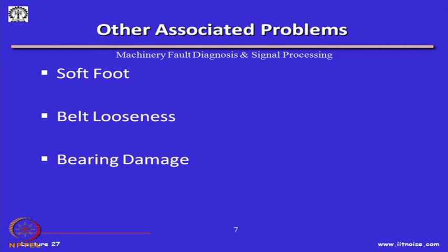Associated problems include soft foot, belt looseness, and bearing damage — if loose components go undetected, they impose excessive forces on bearings, eventually damaging them. One defect leads to another, which is why early detection in condition monitoring is critical. If the initial defect goes unnoticed, it can develop into a more severe problem that is difficult to diagnose.